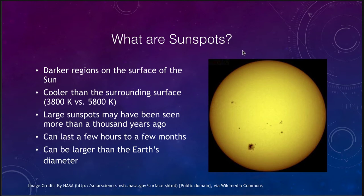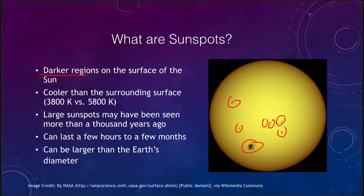Sunspots — what are they? They are dark regions on the surface of the sun. When you look at an image of the sun, of the photosphere, you can pick out sunspots, larger ones and smaller ones scattered around. Why are they dark? They're dark because they are cooler than the surrounding surface. They are still incredibly hot — almost 4,000 degrees as compared to 6,000 for the surrounding sun. But when you look at something cooler against the background of something much brighter, they appear dark.